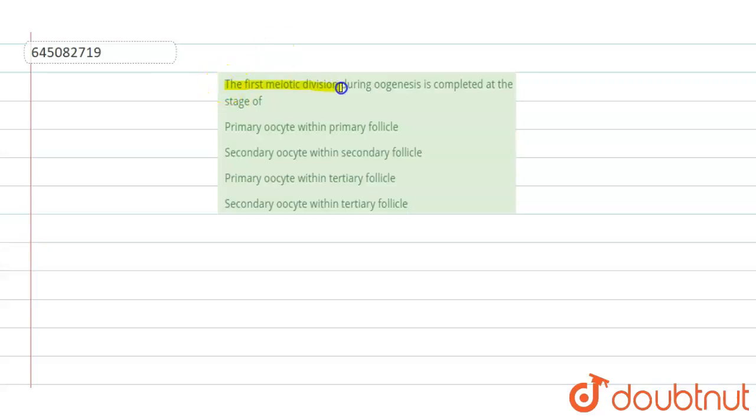...asked: the first meiotic division during oogenesis is completed at the stage of? Options are: primary oocyte with primary follicle, secondary oocyte with secondary follicle, primary oocyte with tertiary follicle, secondary oocyte with tertiary follicle. Okay, so this is asking about the process of oogenesis.